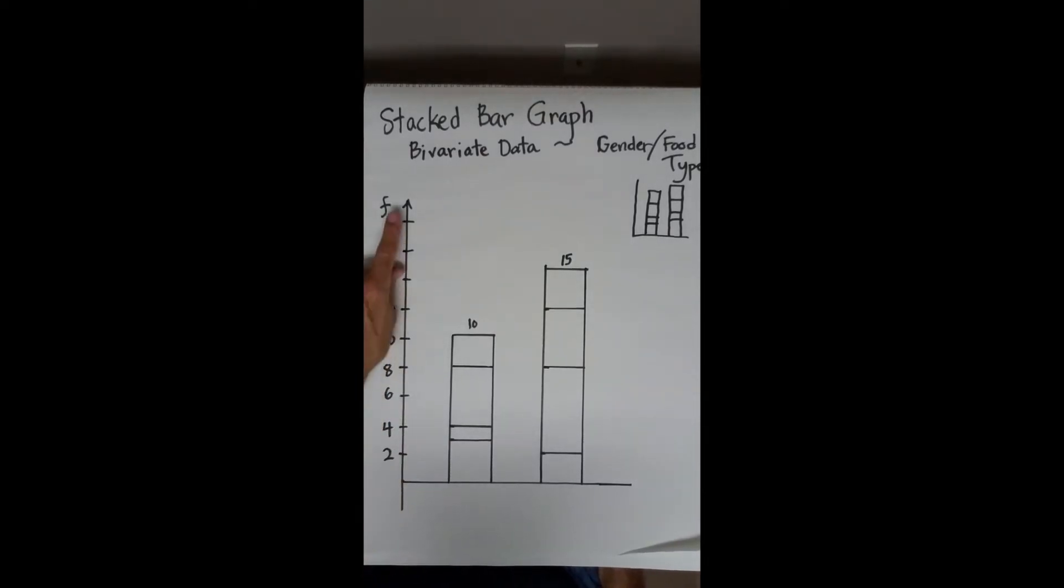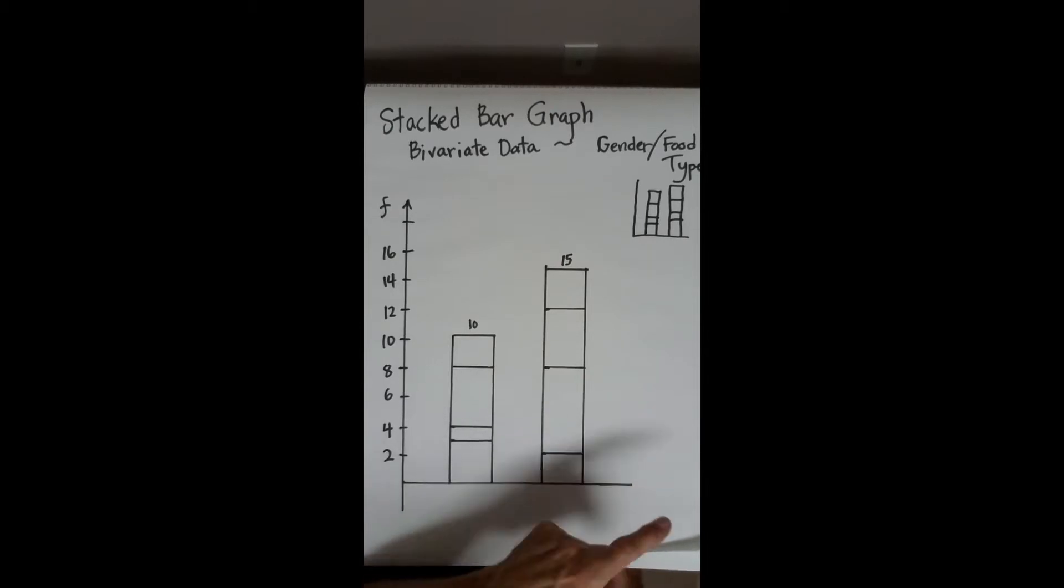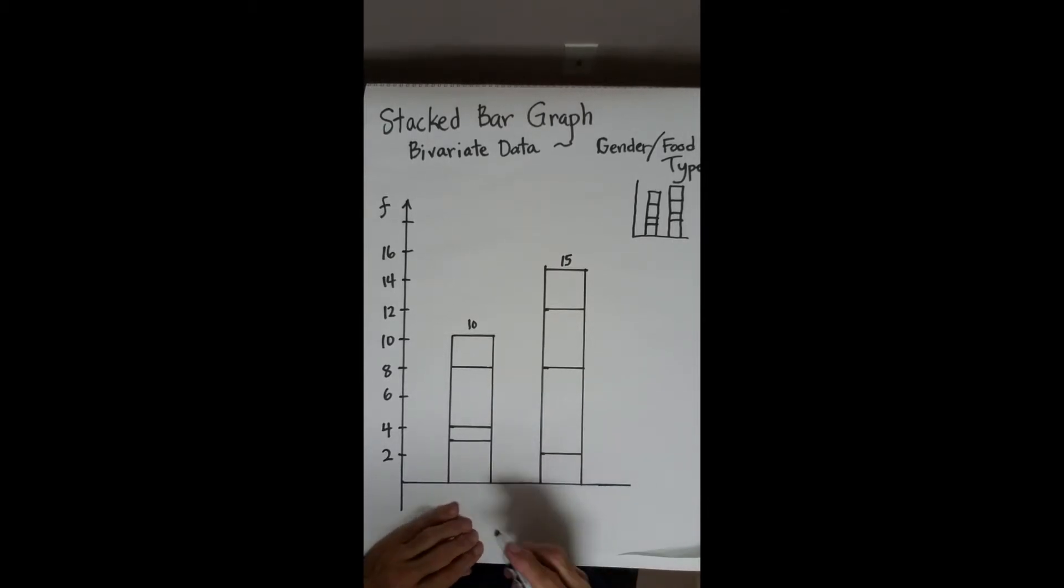On a frequency scale, you can put an arrow, but on a data scale, you generally, you don't have to put an arrow here. It's really your choice. Females, male.